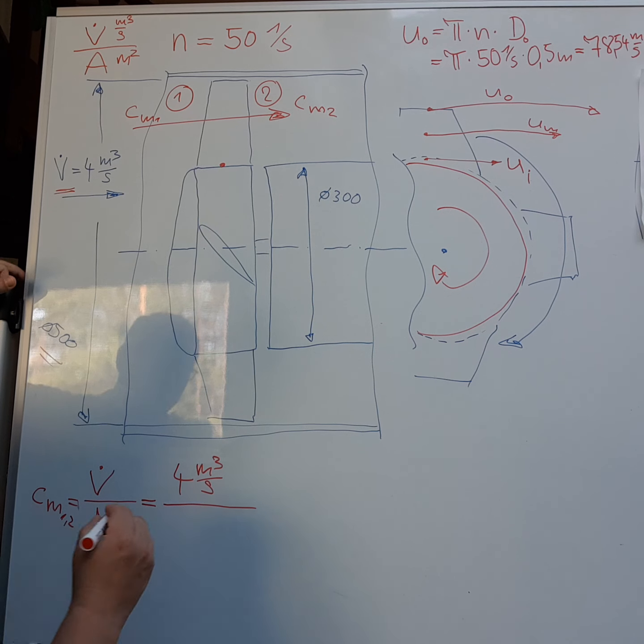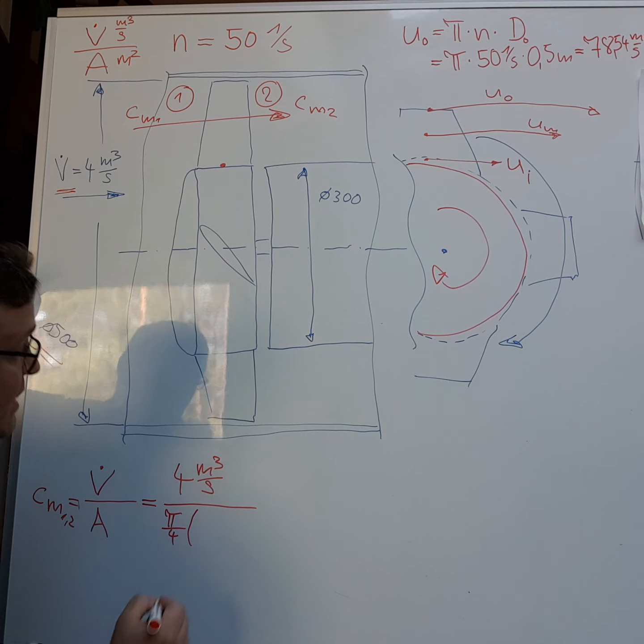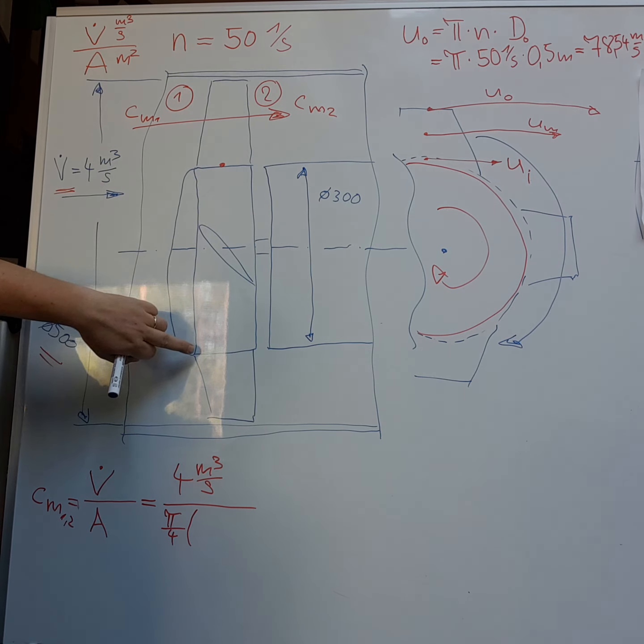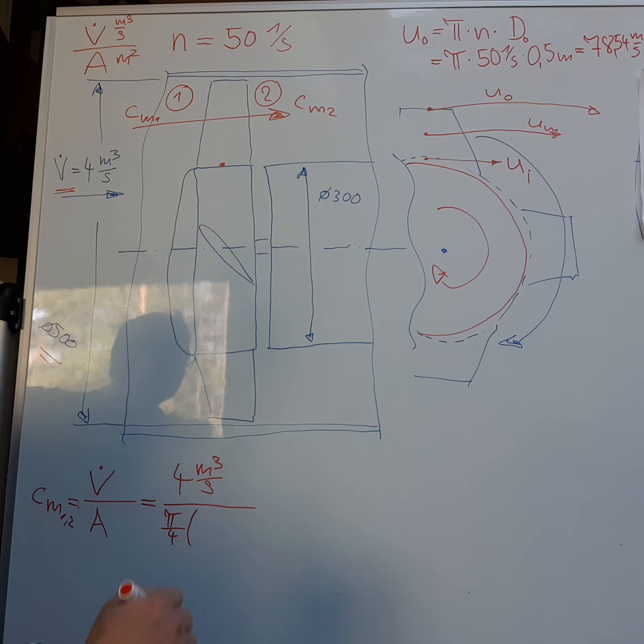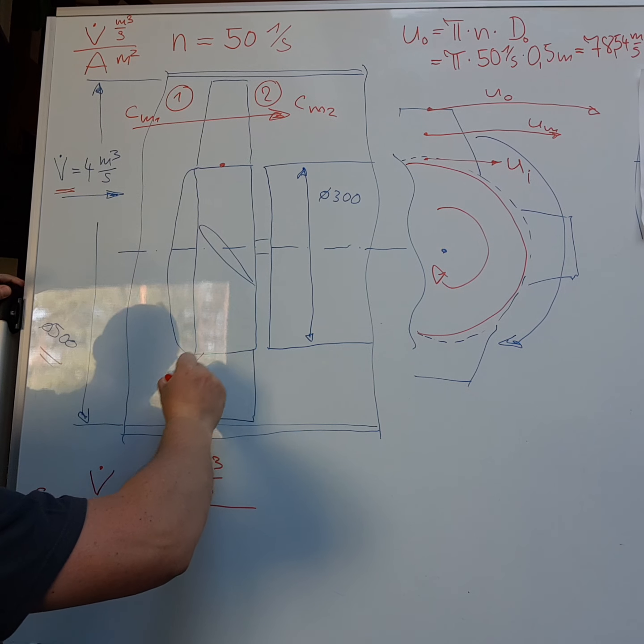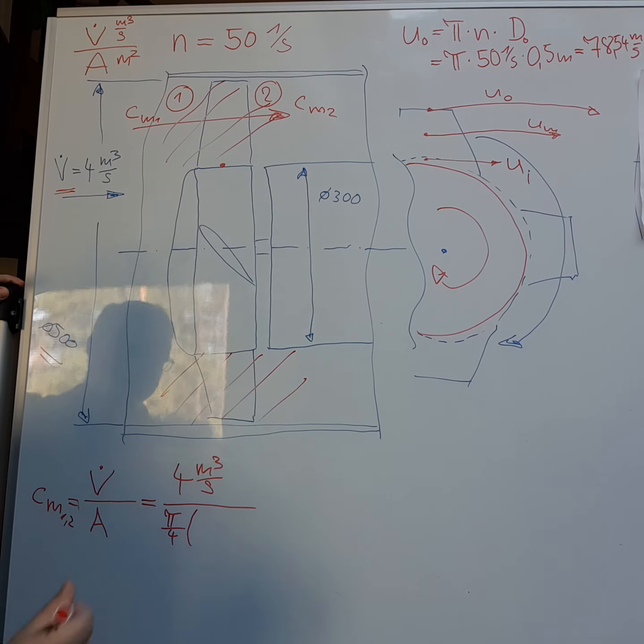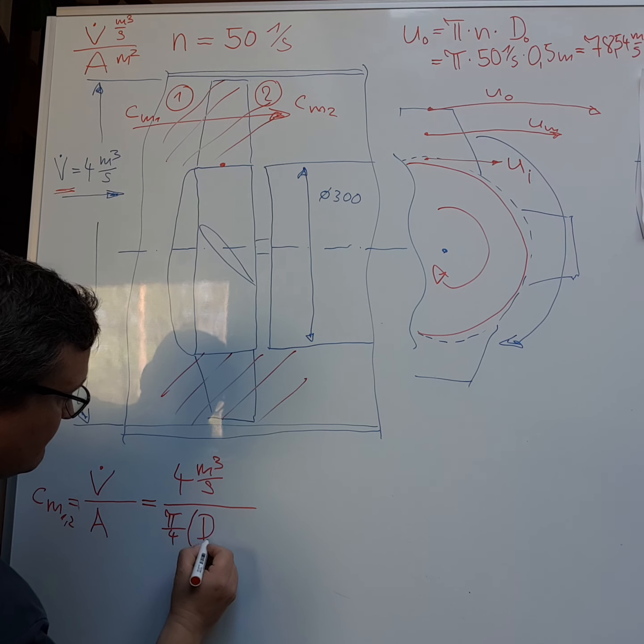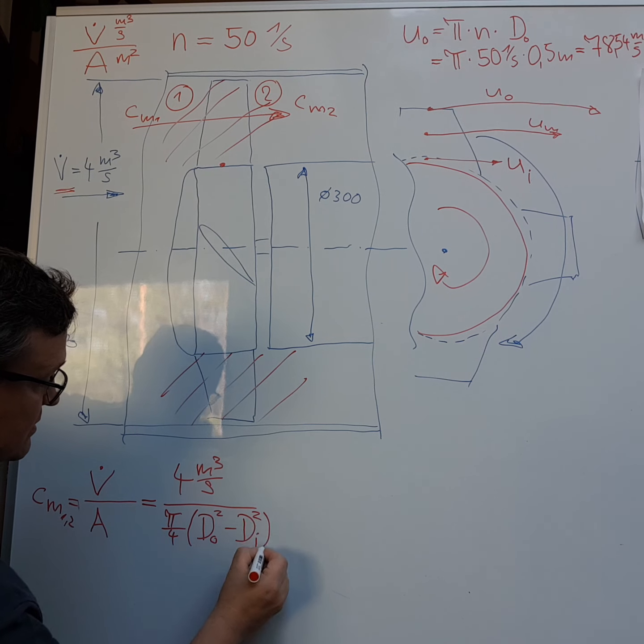And how can we calculate the area? We have π divided by 4. Now we have to take the outer diameter of the pipe and subtract the diameter of 300 of this hub to get only the ring area here. Only this area is needed.